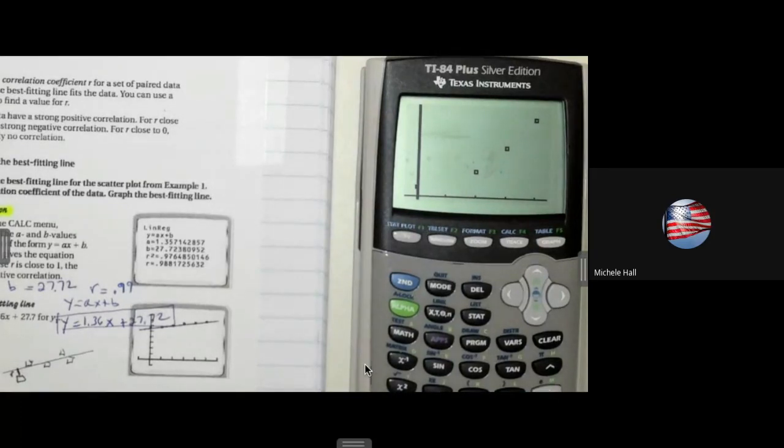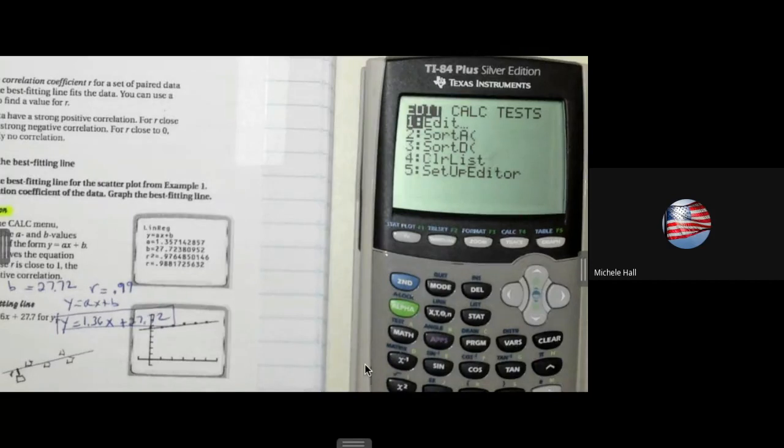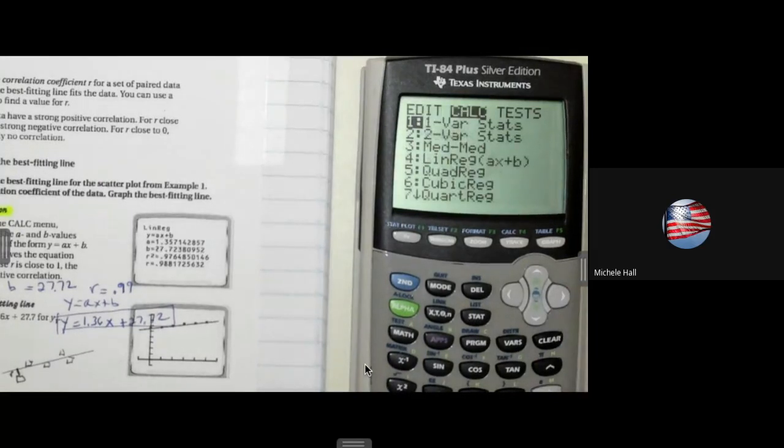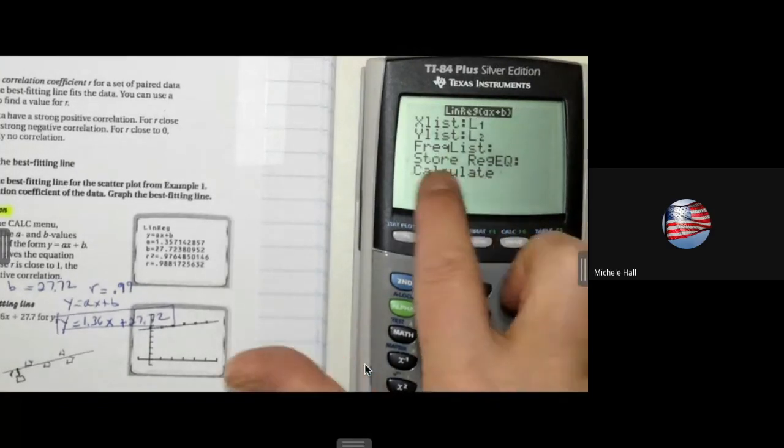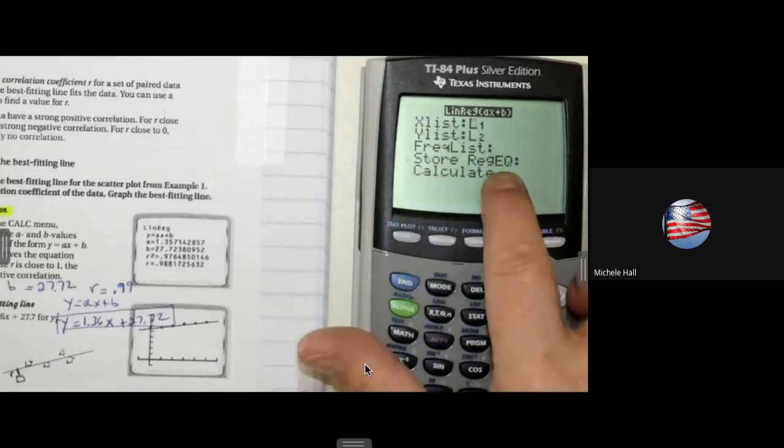Exactly, very good. We want to calculate a linear regression. Now we need to find the best fit line for this data. So we're going to go back to stats, calculate at the top, arrow over and number four. So stay with me on number four here when we go through here because this is where you store your regression equation.